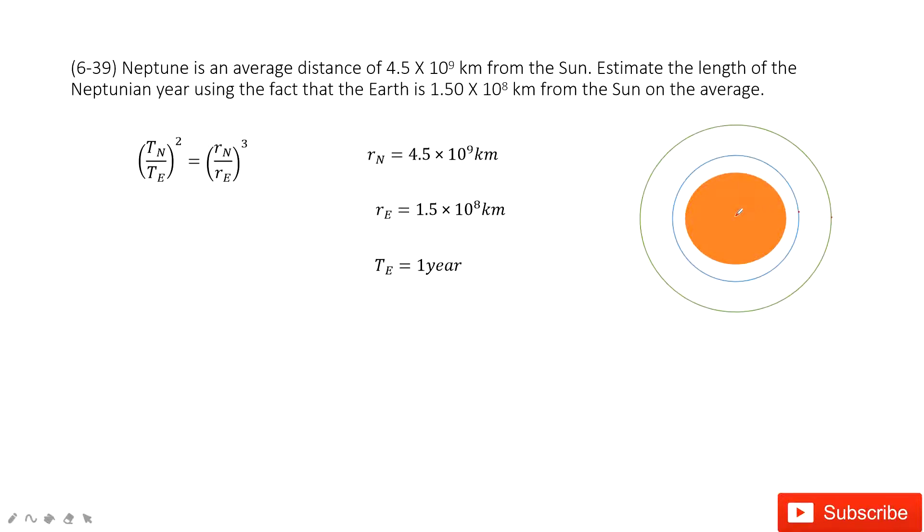we know the distance from the Sun to the Earth and the distance from the Sun to Neptune. And we also know the period for the Earth rotate around the Sun, this is one year.